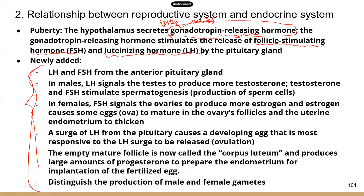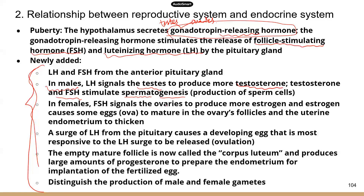FSH and LH are released by the pituitary gland, and they do slightly different things. In males, luteinizing hormone signals the testes to produce more testosterone — so it affects the male hormone. Testosterone and follicle-stimulating hormone together will stimulate spermatogenesis. 'Spermato' refers to sperm, 'genesis' refers to production — so spermatogenesis refers to the production of sperm cells.